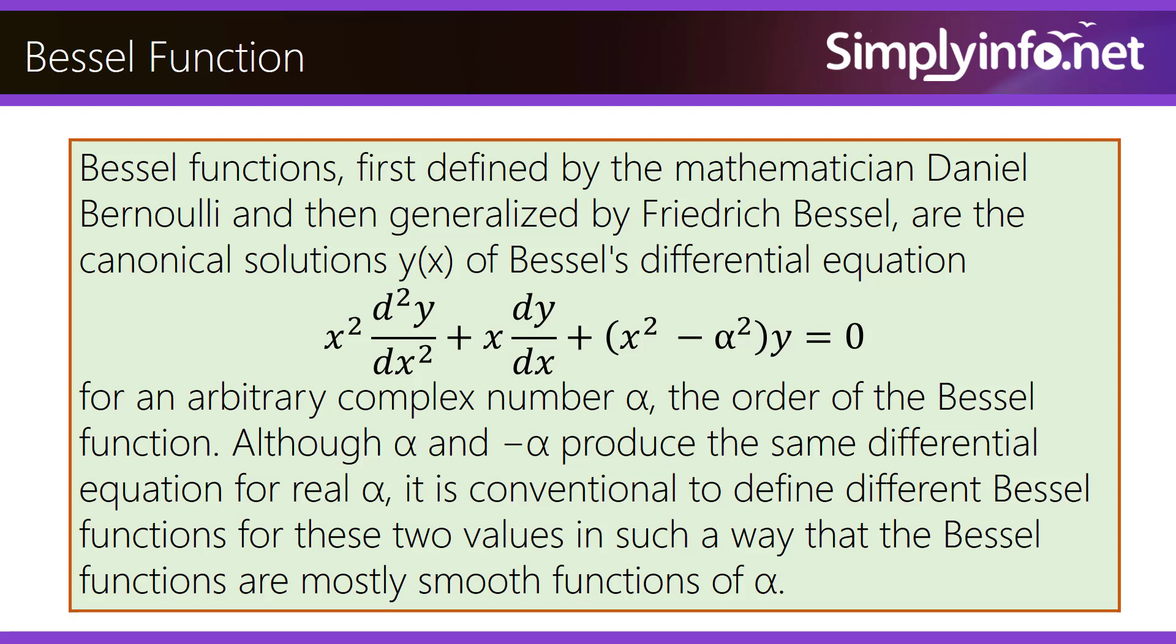For an arbitrary complex number alpha, the order of the Bessel Function, although alpha and negative alpha produce the same differential equation for real alpha, it is conventional to define different Bessel Functions for these two values in such a way that the Bessel Functions are mostly smooth functions of alpha.